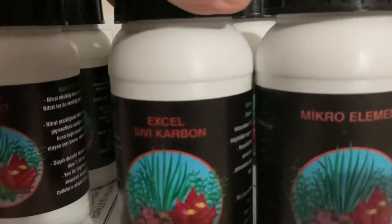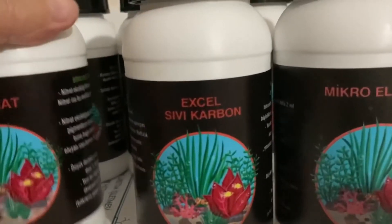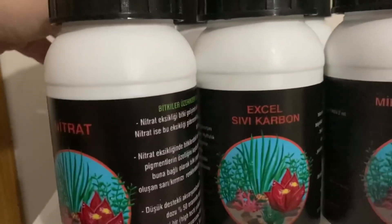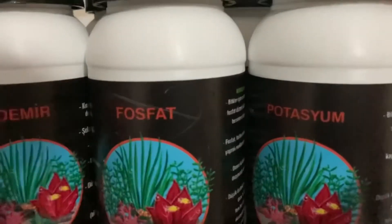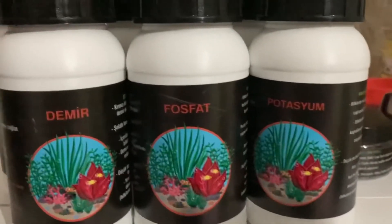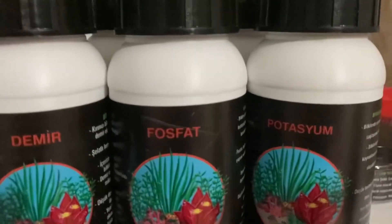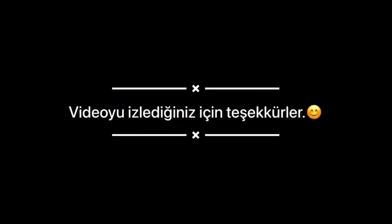Mikro elementler, Excel sıvı karbon, özellikle yosunlarla mücadelede kullanılıyor. Nitrat, demir, fosfat ve potasyum. Bu gübrelerimiz var. Balıklarınıza ve canlılarınıza iyi bakın, sağlıklı ve keyifli günler diliyorum.